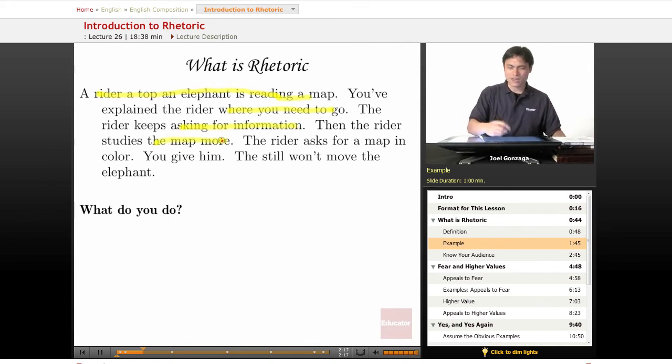And then he says, 'Well, this is a nice map, but I want a little more information.' So you give the rider more information, and the rider just keeps reading the map. You give him a map in color, and he keeps reading. But this rider is still not going to move that elephant. So what do you do?